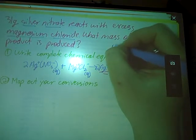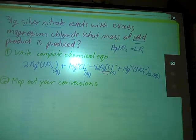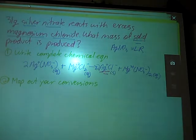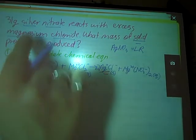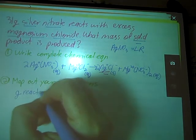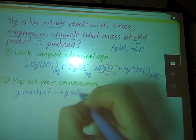So I'll go ahead and write that over here. My silver nitrate is going to be my limiting reagent. I know that's the one that I'm going to run out of first and is going to limit how much solid I can make. So I'm starting in grams of my reactant, and I've got to get to grams of my solid product.